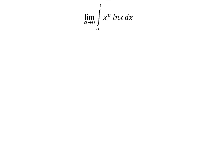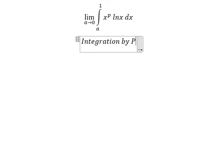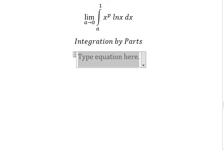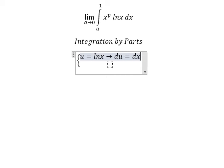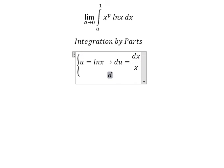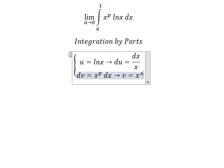We can use integration by parts. I will set u equal to ln(s). Next we need to differentiate both sides. We have dv equal to s to the power of b ds, and the integration of this gives us the following.